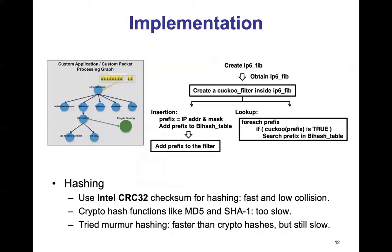We modified the VPP code base to implement QVPP. The graph on the left-hand side shows part of the packet processing graph in VPP, and on the right-hand side it shows that we built the cuckoo filter and inserted it in the ip6_fib function in VPP for insertion and lookup. It turns out that having efficient hash functions is critical to enable high-speed packet processing, and we ended up using Intel CRC32 checksum as our hash function.